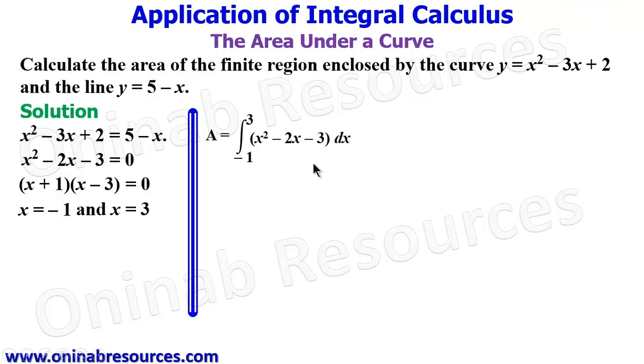We evaluate this to give us our area. Integrating this, we are going to have it as x³/3. Then if we integrate this, this is going to be 2x² divided by 2, giving us x². So we have -x². This one is going to give us 3x, -3x, then from -1 to 3.